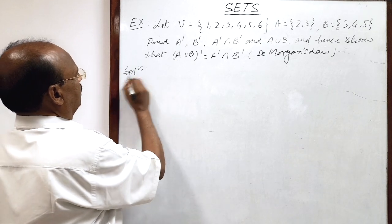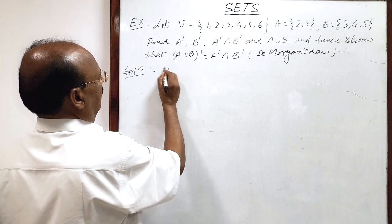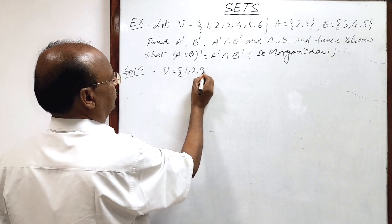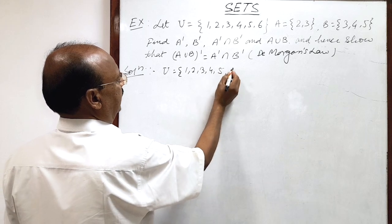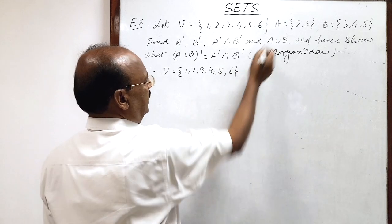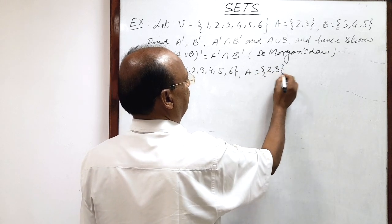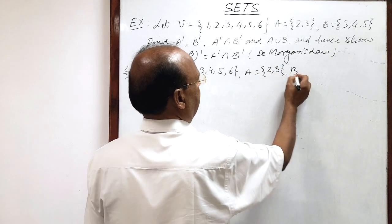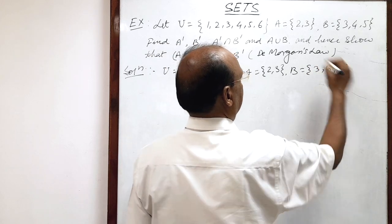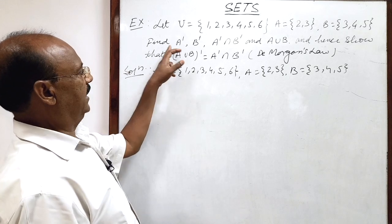The universal set has elements {1, 2, 3, 4, 5, 6}, set A has elements {2, 3}, and set B has elements {3, 4, 5}. First of all, let us find A complement, then B complement, and so on.